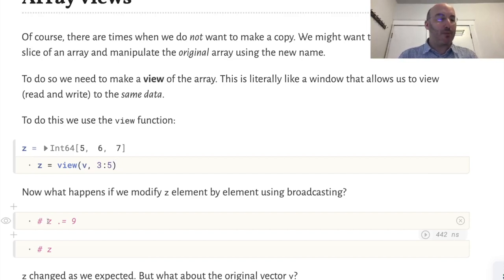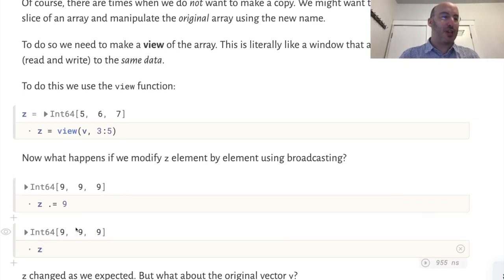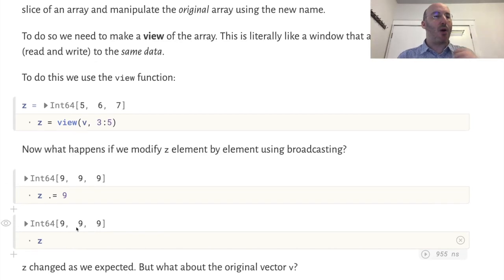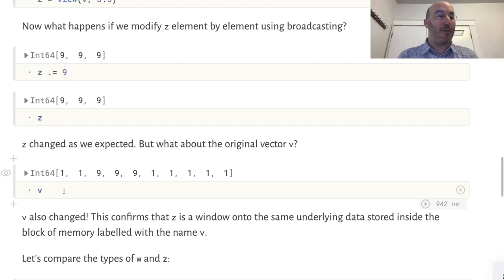Now let's modify Z element by element. Z is this view. Z itself has changed. The question is, now did the original array v also change? We see that it did change. That is the point of a view. A view is like a window looking into the array. It's even more than a window because you can actually reach in through that window and manipulate the original array. It's a view that allows both reading and writing of the original data.